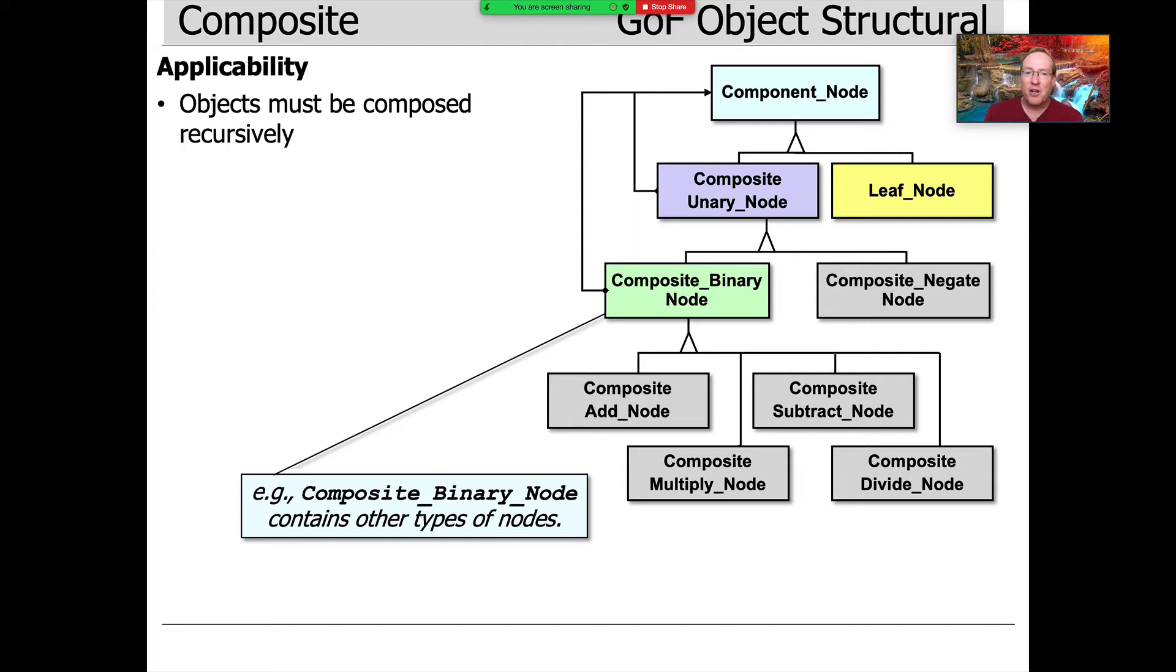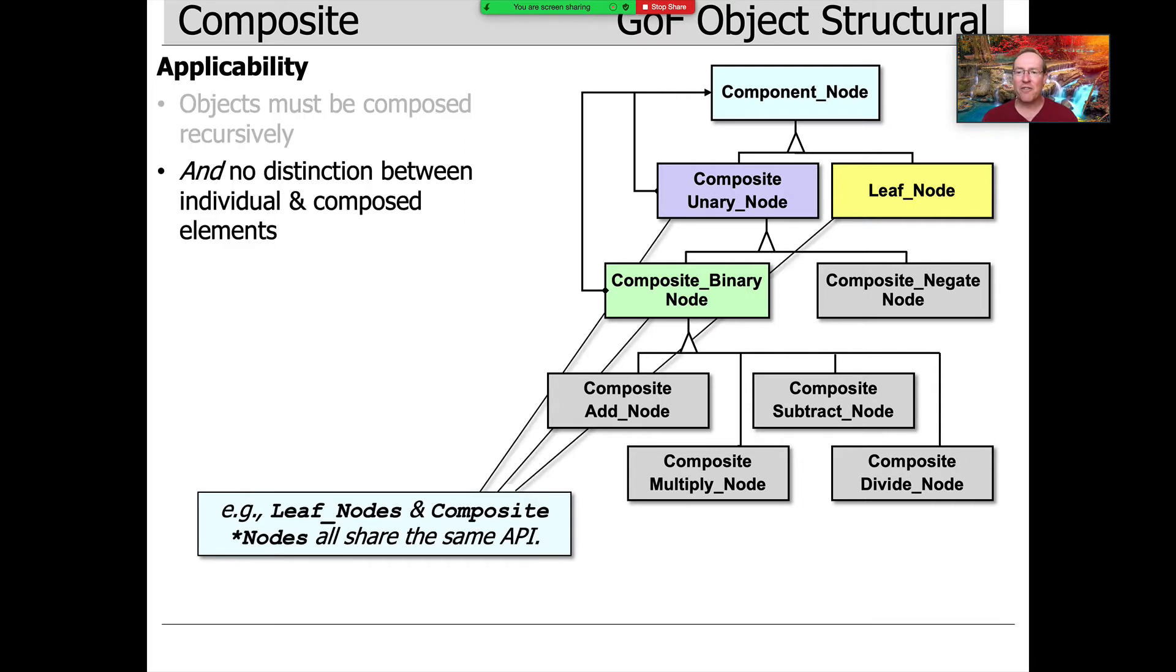They might be leaf nodes, they might be composite negate nodes, they could be other composite binary nodes. But the point is that at some level of usage we don't know and we don't really care how they're defined. We just care that they're connected together in a tree-like fashion.